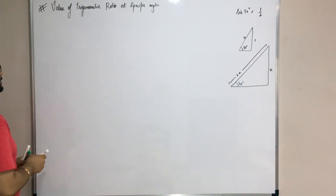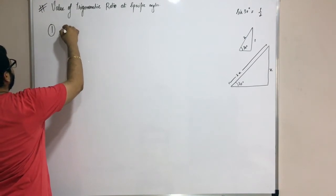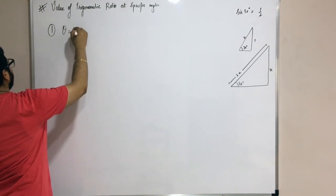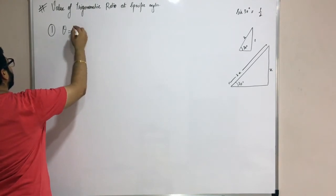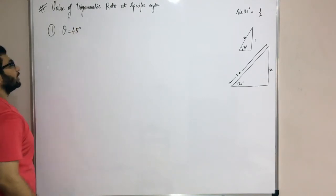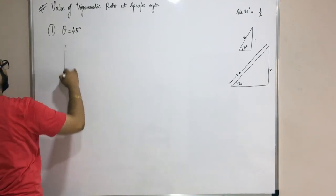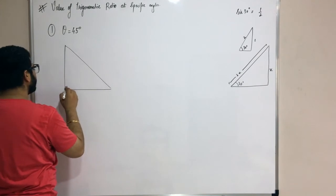Let's see the value at some specific angles. Case one: theta equals 45 degrees. Can you calculate 45 degrees? Yes, you can. For example, you have a basic right-angle triangle in which this is 90 degrees.